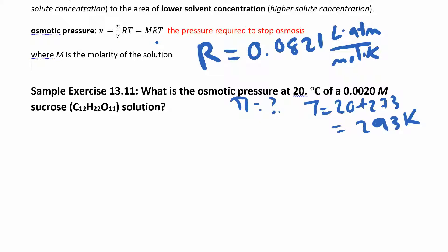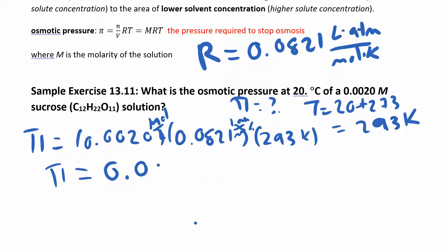So π equals M (0.0020) times R (0.0821) times T (293). Looking at the units, moles over liters times liters atmospheres per mole kelvin gives atmospheres for osmotic pressure, which makes sense. When you calculate that, you get 0.048 atm for your osmotic pressure.